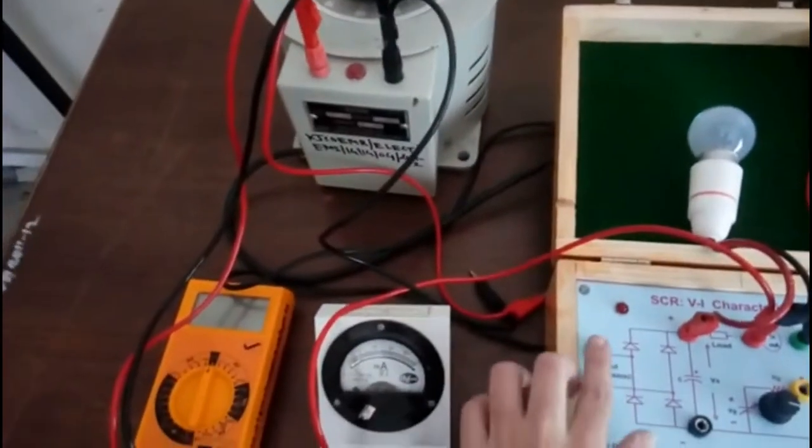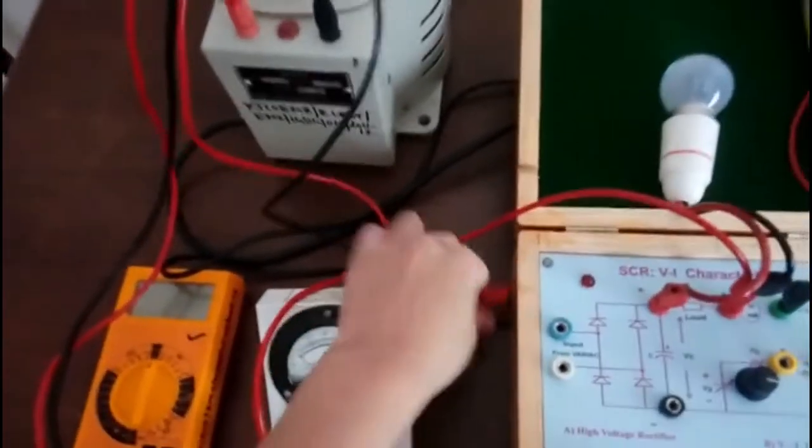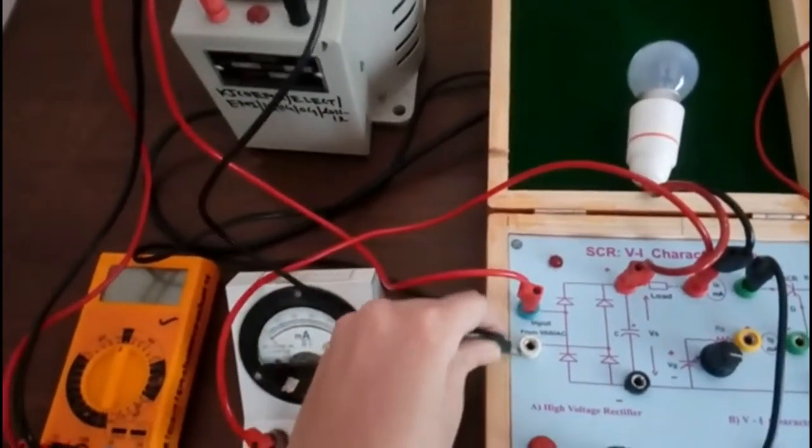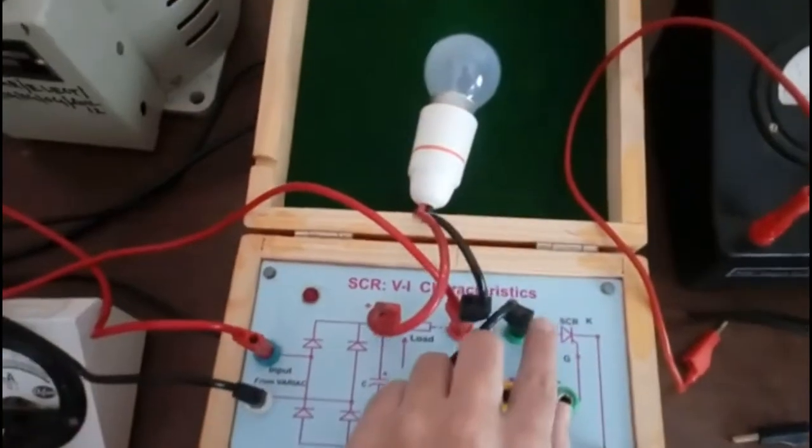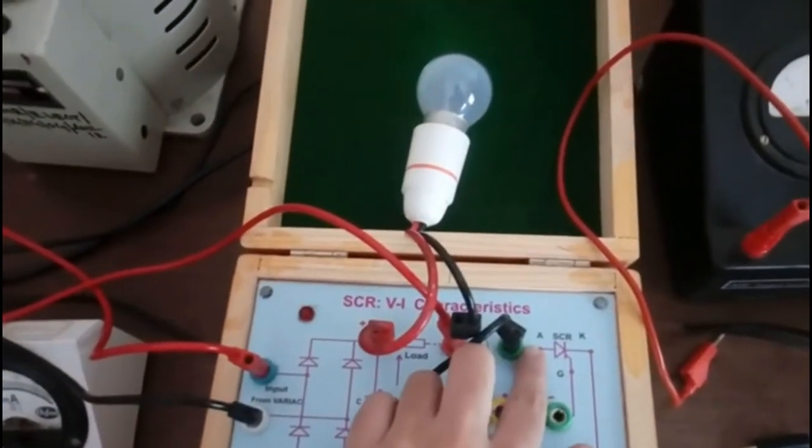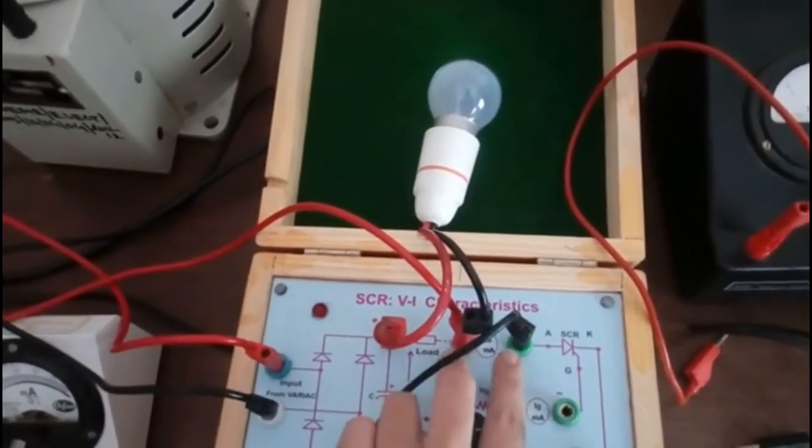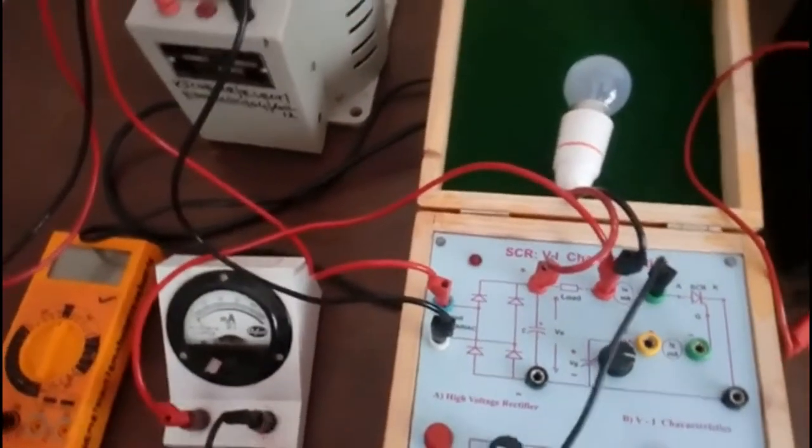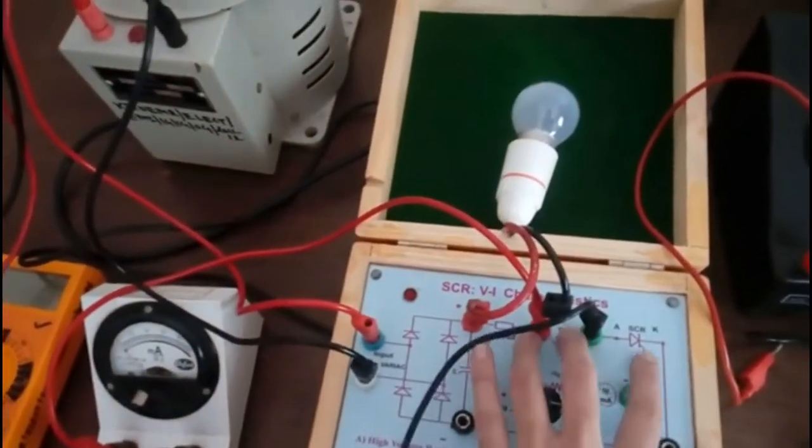Then I have connected a DMM, a single phase variac or a dimmer stat. This variac will give supply over here. This is my supply from the variac, and here this is connected to the SCR anode terminal.